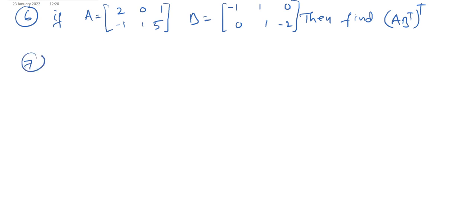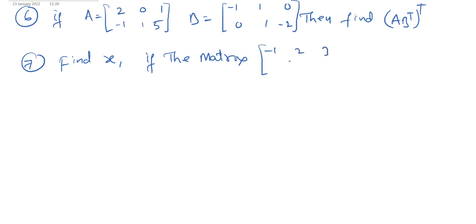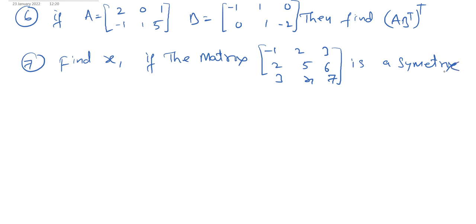Seventh question: find X if the matrix [−1, 2, 3; 2, 5, 6; 3, X, 7] is a symmetric matrix.